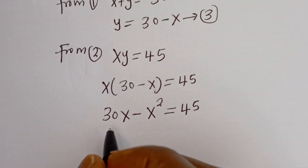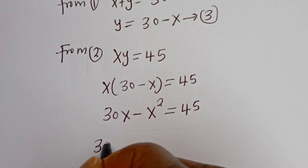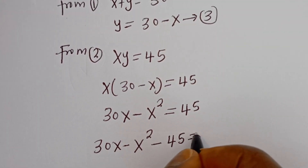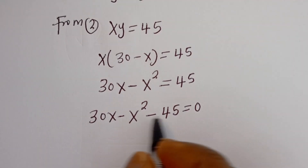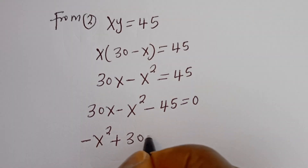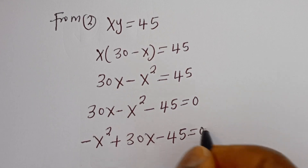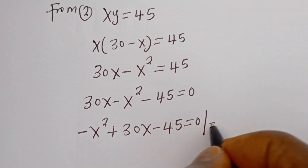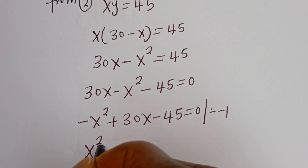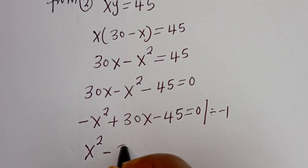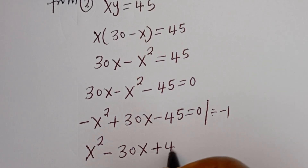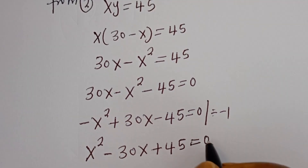And here we have 30x minus x squared minus 45 is equal to 0. Let's put this in standard form: minus x squared plus 30x minus 45 is equal to 0. Dividing all through by minus 1: minus x squared divided by minus 1 is x squared, plus 30x divided by minus 1 is minus 30x, and minus 45 divided by minus 1 is plus 45, is equal to 0.